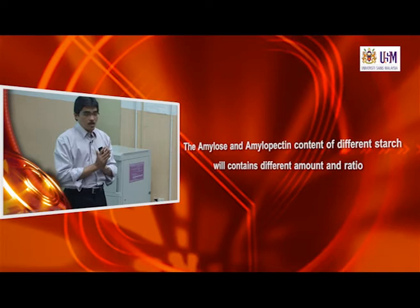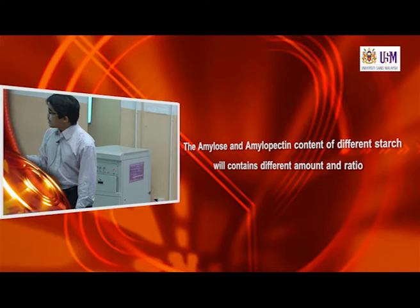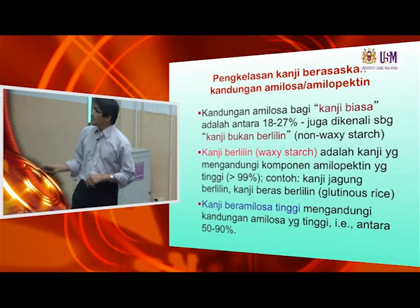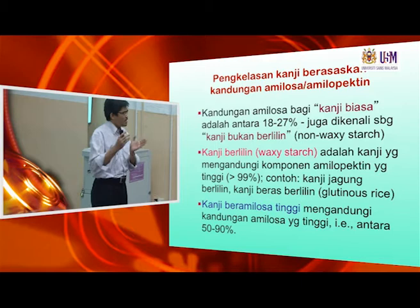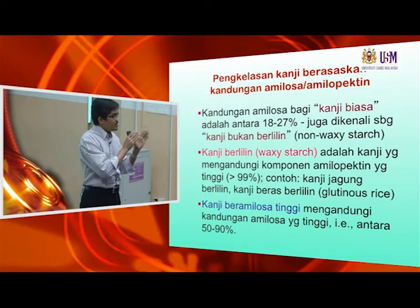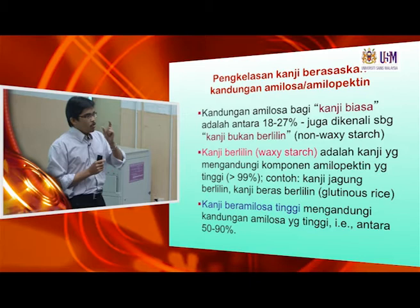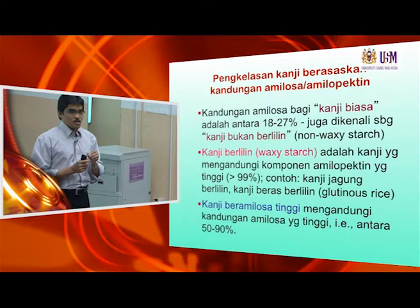On average, the normal starch — we call it kanji biasa, normal starch — contains around 18 to 27, or maybe 30 percent, or maybe as much as 33 to 34 percent amylose. So between that range, 18 to 34 percent, what we call normal starch.